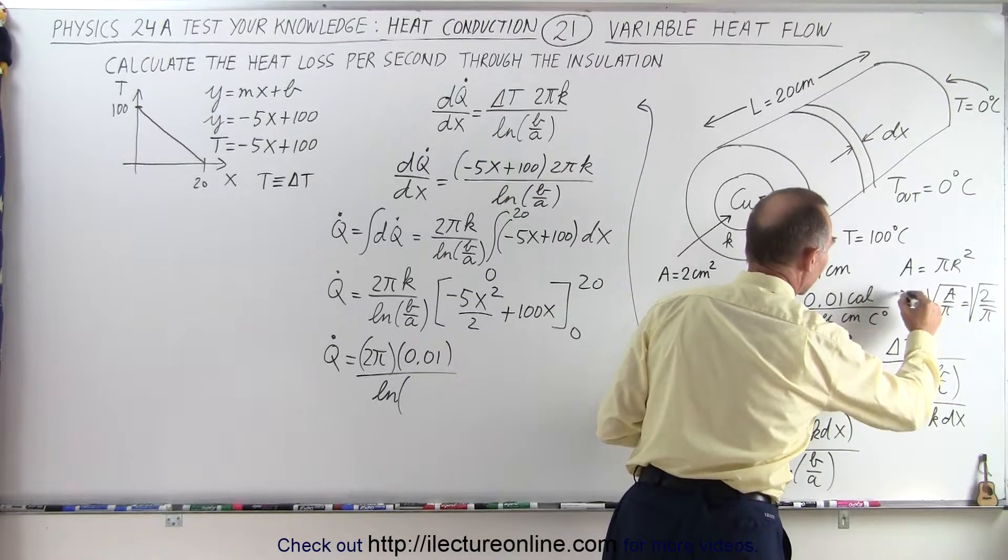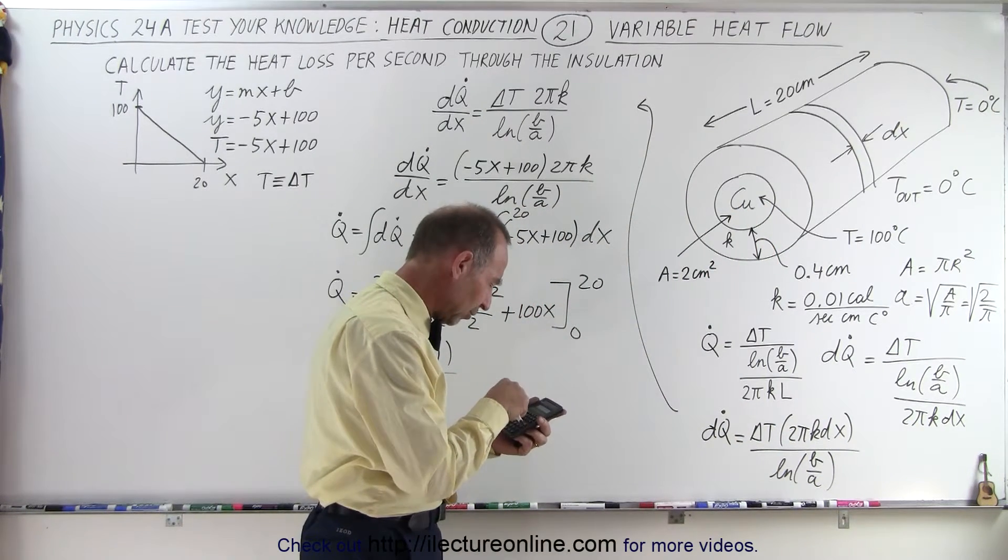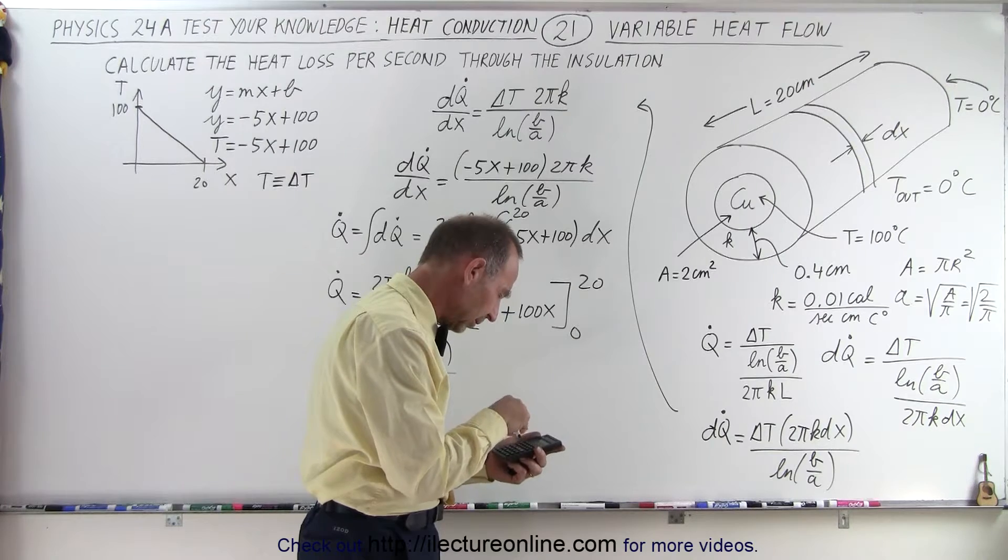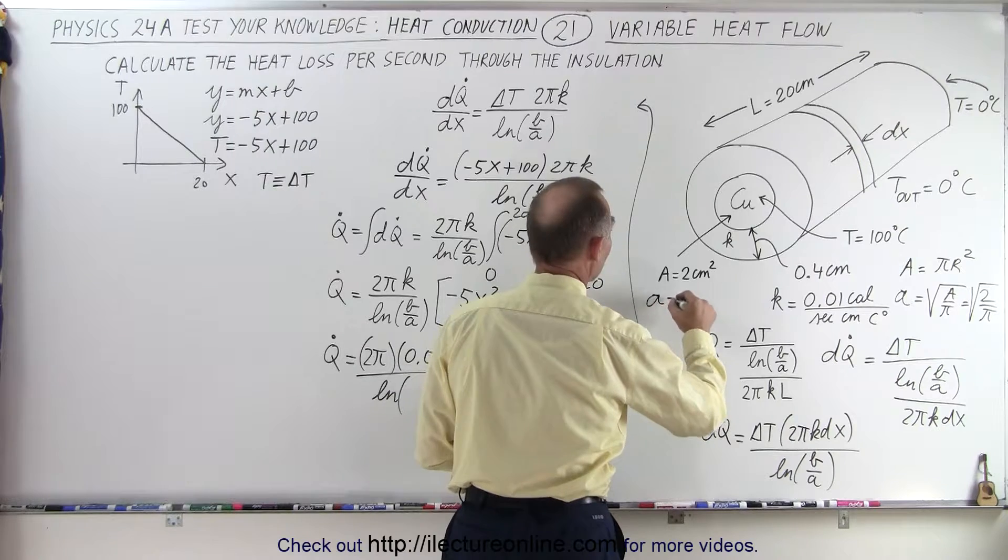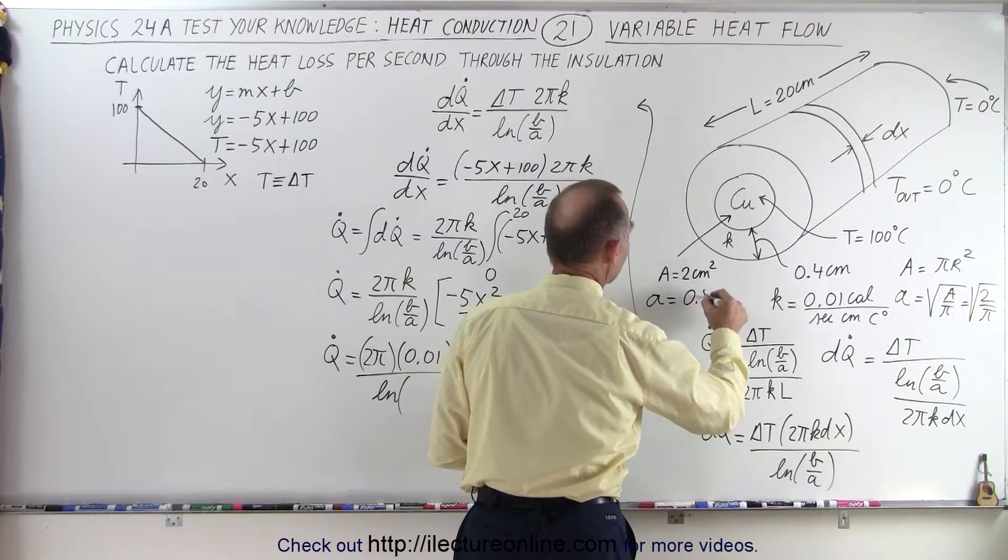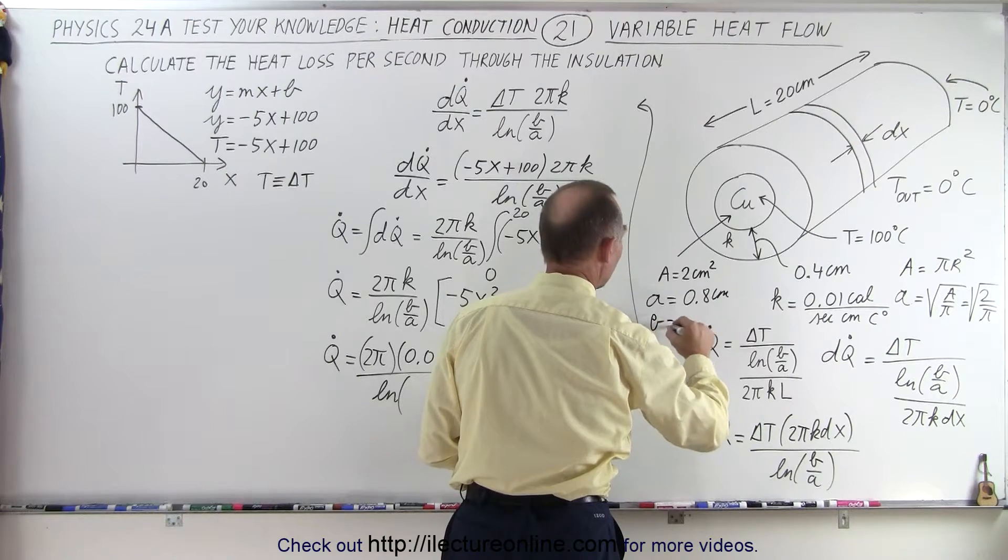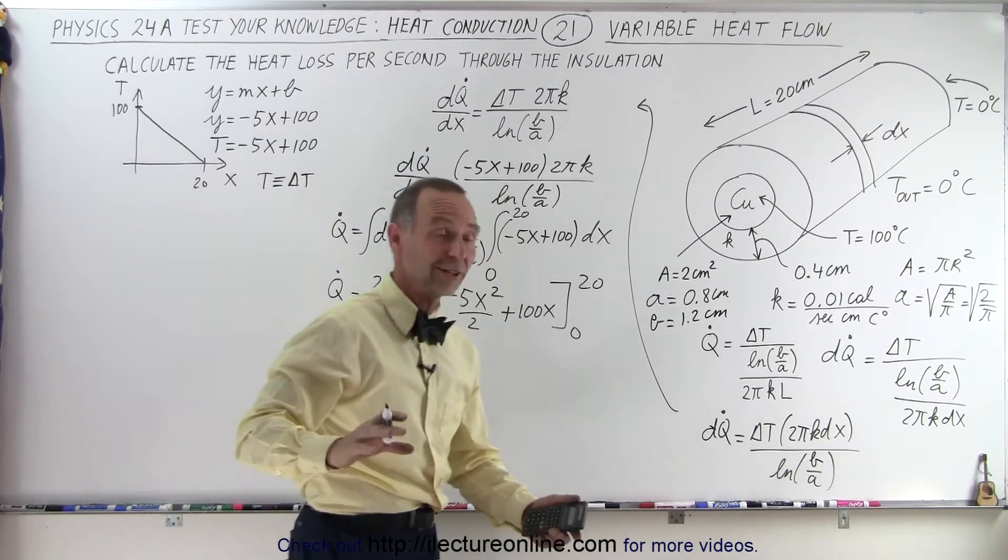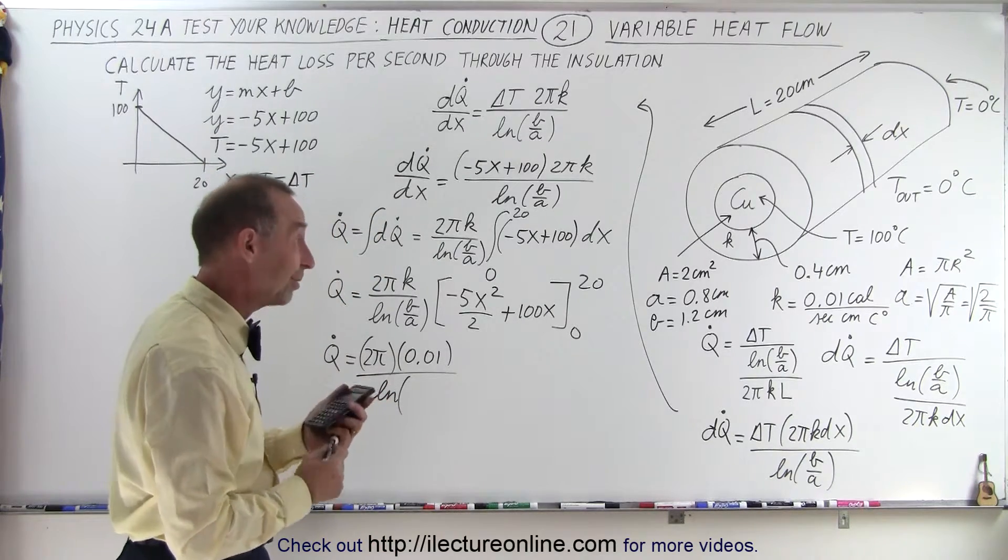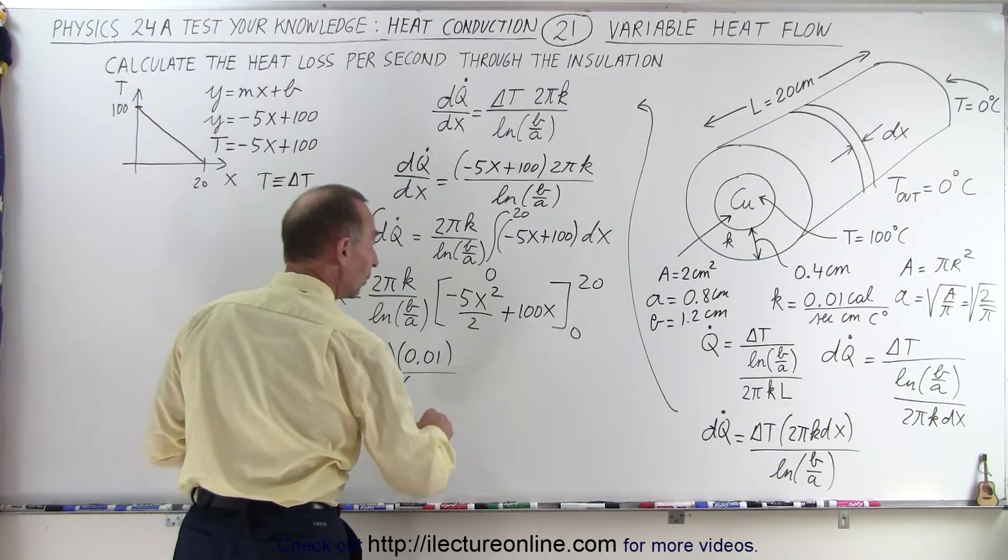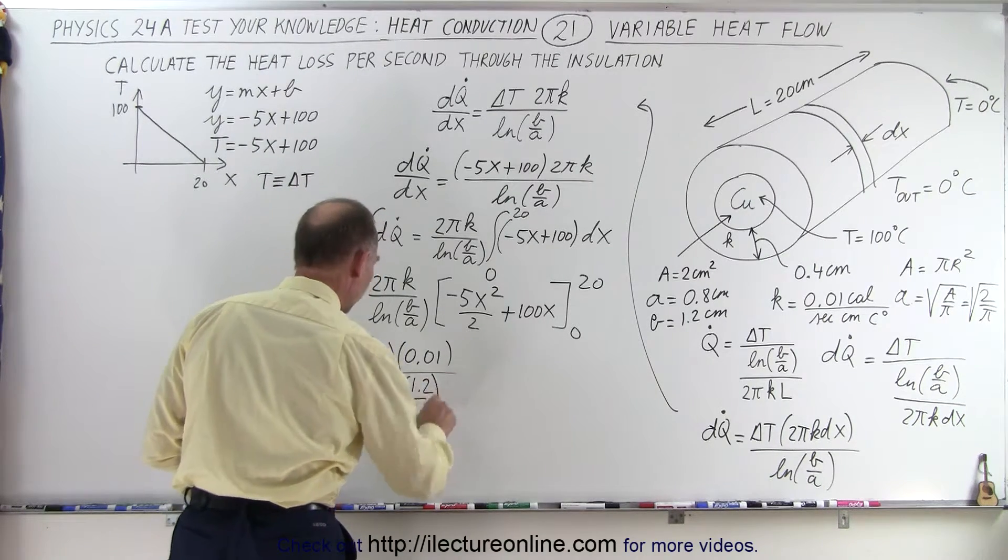The thickness is 0.4, so that means the outside radius is 1.2 centimeters. So they gave us an additional problem. They only gave us the cross-sectional area of the copper, not the radius of the copper. So B over A will be 1.2 divided by 0.8. So those are all the constants.